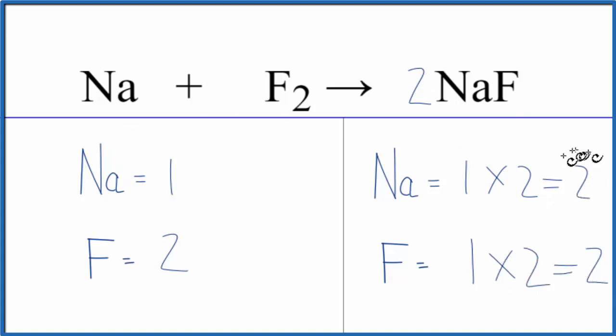To balance the sodium atoms, we have two here and one here. We'll put a coefficient of two in front of the Na. One times two gives us two sodium atoms, and we're done. This equation is balanced - we have two sodiums on each side and two fluorines.